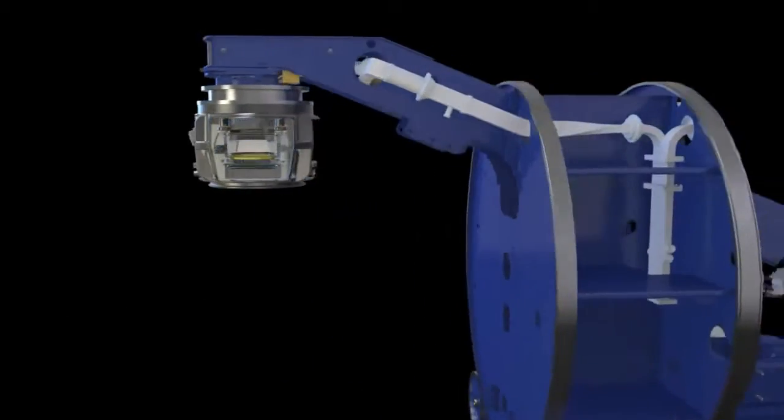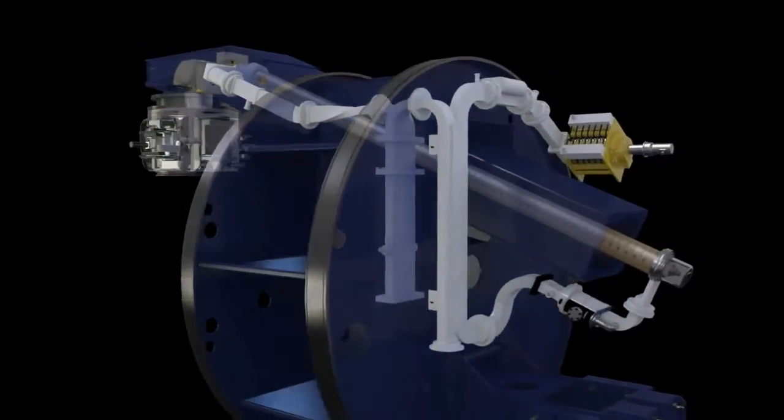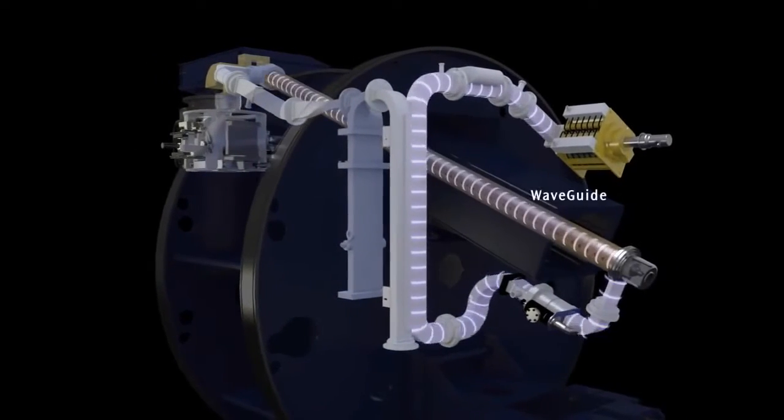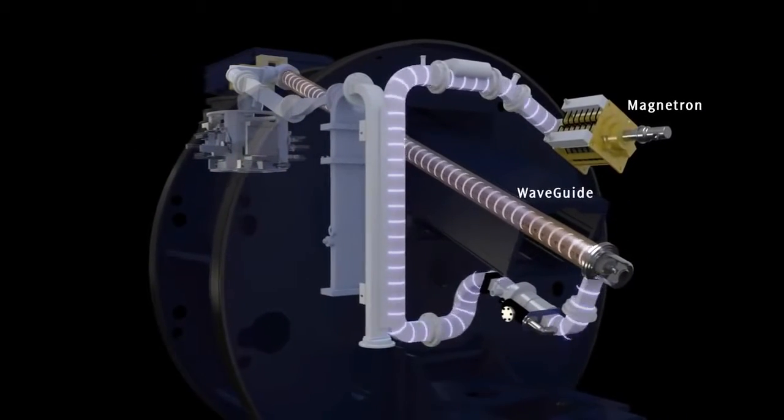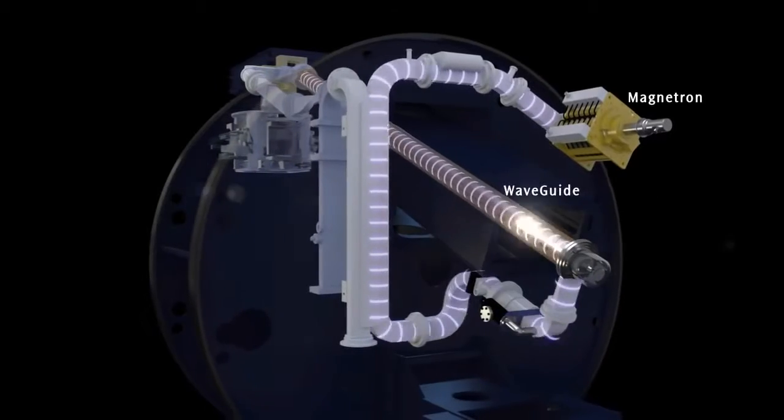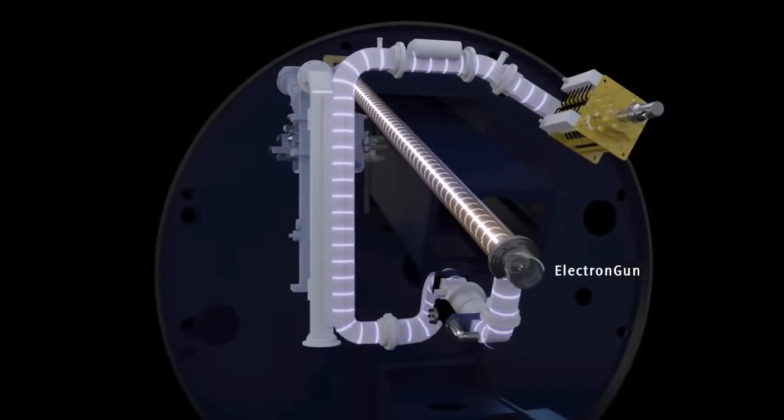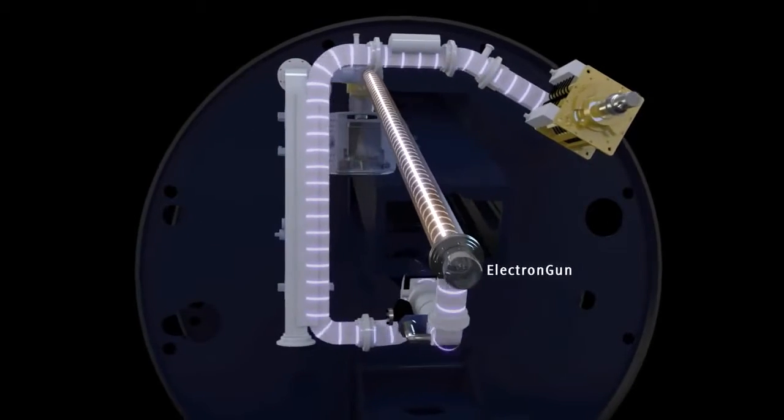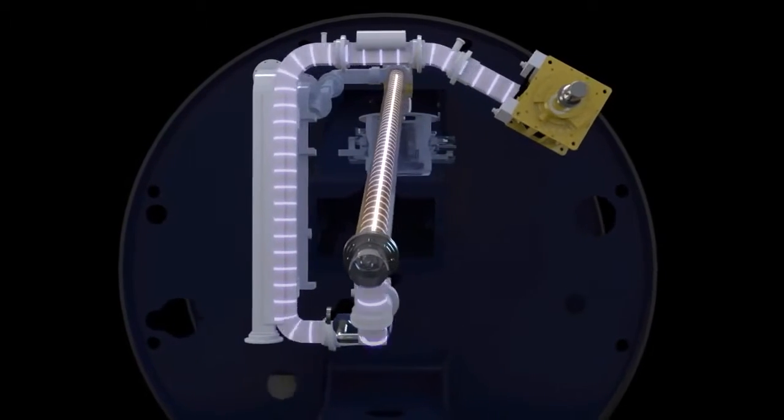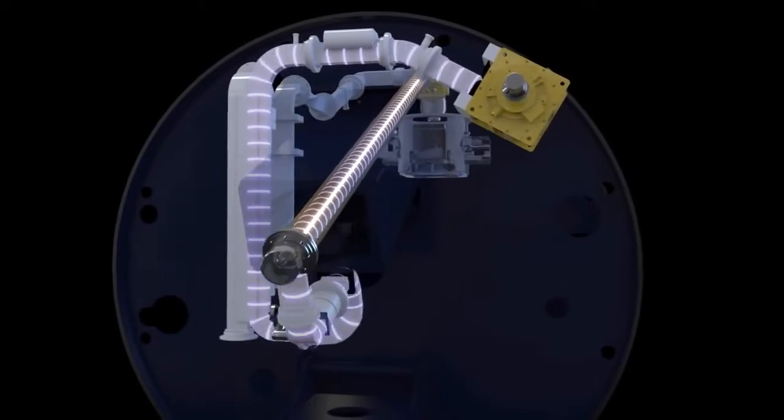Beam generation. Radio frequency waves are pulsed into the waveguide by the magnetron. This is synchronized with the injection of electrons into the waveguide by the electron gun. The radio frequency waves accelerate the electrons along the waveguide to a speed approaching the speed of light.